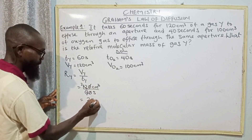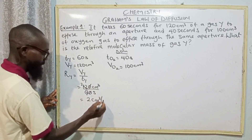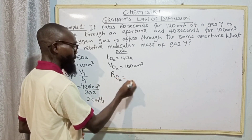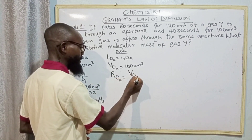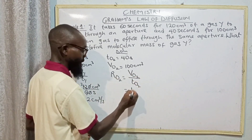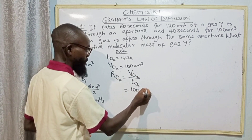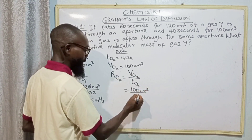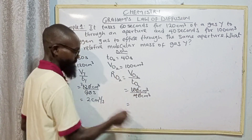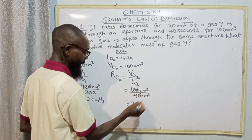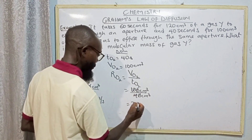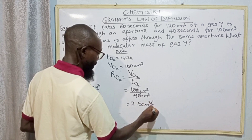So we have 2 centimeter cube per second. Now for the rate of oxygen: the rate of oxygen equals volume of oxygen divided by time of oxygen. Our volume of oxygen is 100 centimeter cube, time of oxygen is 40 seconds. That gives us 2.5 centimeter cube per second.